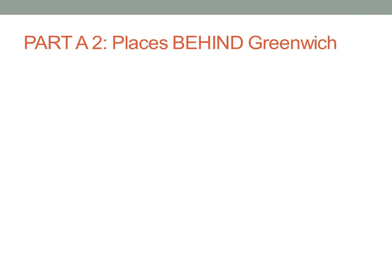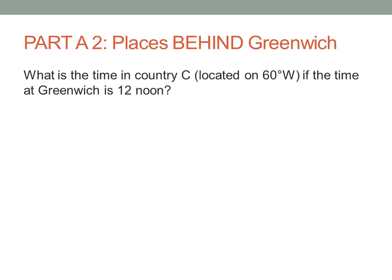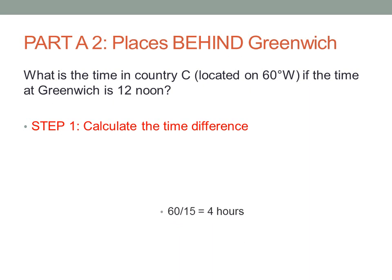We have just covered two worked examples for calculating time ahead of Greenwich. These next two worked examples will explore calculating time behind Greenwich. Our first worked example states: what is the time in country C, located on 60 degrees west, if the time at Greenwich is 12 noon? Our first step is to calculate the time difference. To do so, we're going to divide 60 degrees by 15, which will give us 4 hours time difference.